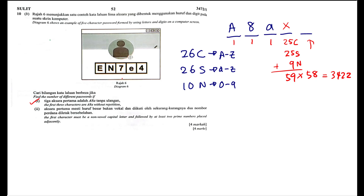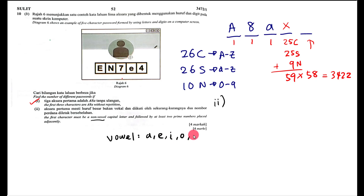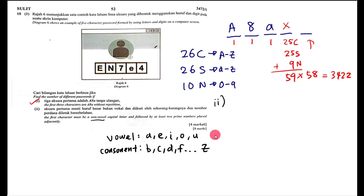Now let's look at part two. They say the first letter must be non-vowel. Vowels are A, E, I, O, U — so that's five vowels. Non-vowels, called consonants, are 26 − 5 = 21. Since they specify capital letter, we use capital consonants only, giving 21 options. We also need to identify prime numbers among the 10 digits: 2, 3, 5, 7 — four prime numbers. The non-prime digits are 0, 1, 4, 6, 8, 9 — six non-prime digits.